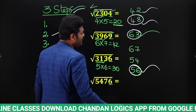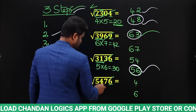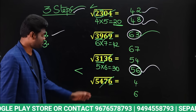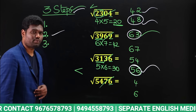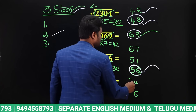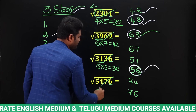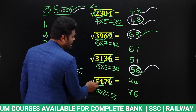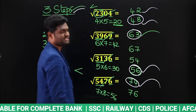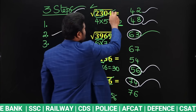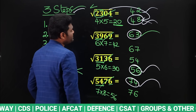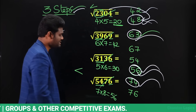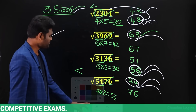For √5476: last digit is 6, possibilities are 4 or 6. Strike off last two digits — remaining is 54. Perfect square close to 54 and less than 54 is 7² = 49, giving 74 or 76. Multiply 7×8 = 56. Compare: 54 is less than 56, so answer is the smaller one — 74. So √5476 = 74. To summarize: √2304 = 48, √3969 = 63, √3136 = 56, √5476 = 74. Very simple three-step procedure.